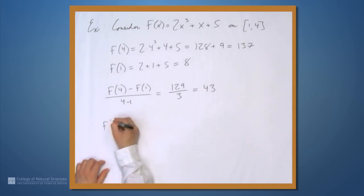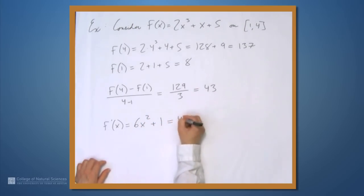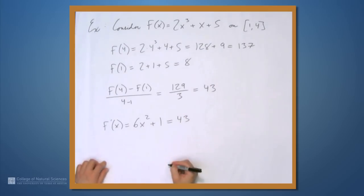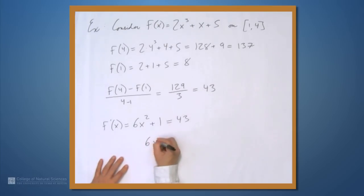f'(x) is 6x² + 1. If we set this equal to 43 and solve for x, what happens? Let's move the 1 to the other side. We get 6x² = 42.